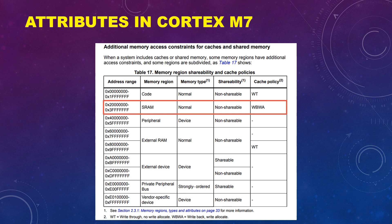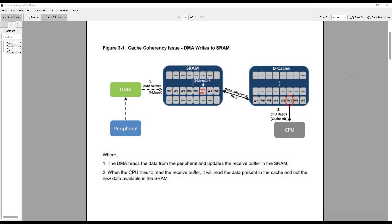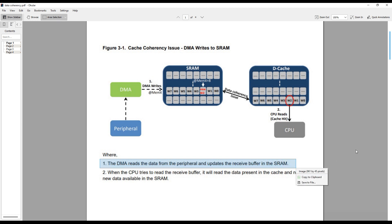We will now see some cases of data coherency issues and how to solve them. This PDF was made from an important microchip document — the link to the original is at the bottom. The first issue is when the DMA writes data into the SRAM. Here, DMA is copying data from a peripheral into the SRAM, and the CPU is trying to copy this data from SRAM to some other location. The cache policy of SRAM is write back with read and write allocate. DMA reads data from the peripheral and updates the receive buffer in SRAM, but since we are using data cache, the CPU reads from the cache, which hasn't been updated — so we have a data coherency issue.